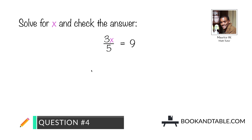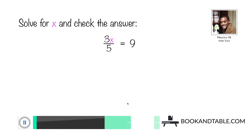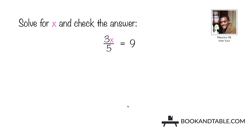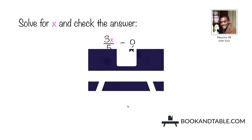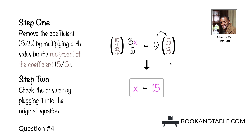Question number four: solve for x and check the answer. 3/5 x is equal to 9. Step one: remove the coefficient 3/5 by multiplying both sides by the reciprocal, which is 5/3. When we do so, we negate our coefficient, leaving us with x on the left side. On the right side we multiply 9 times 5, giving us 45, and 45 divided by 3 is equal to 15. So the answer to question number four is x is equal to 15.